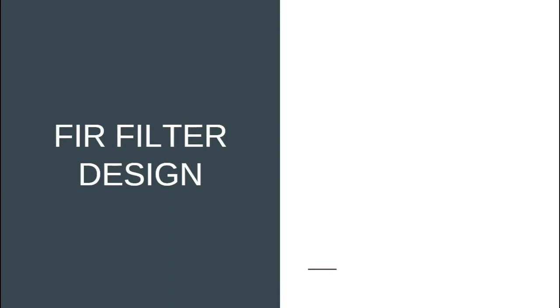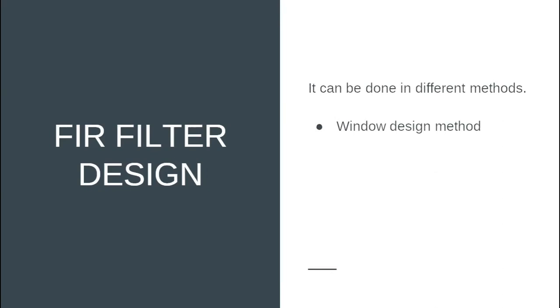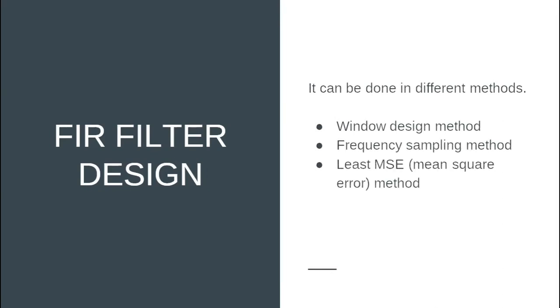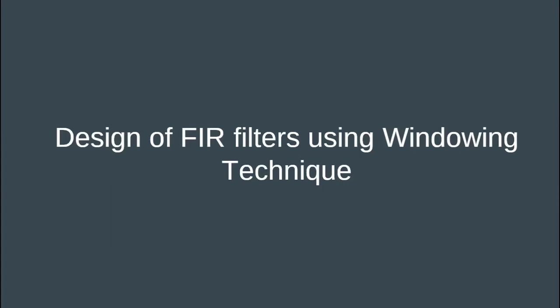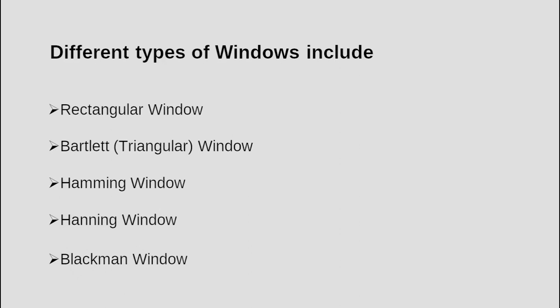Now let's talk about FIR filter designing. It can be done by different methods: window design method, frequency sampling method, least MSE method, and Parks-McClellan method. In this video, let's focus on designing FIR filters using the windowing technique. Based on outputs generated by different windowing techniques, they are classified into different types: rectangular window, Bartlett window, Hamming window, Hanning window, and Blackman window. In this video, let's focus on the rectangular windowing technique.